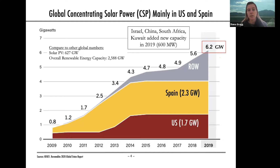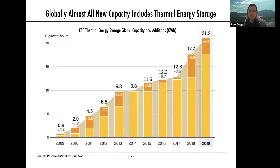The growth is taking place in other countries around the world. In 2019, those countries included Israel, China, South Africa, Kuwait, and France. To put this capacity in perspective, here is our capacity in gigawatts of CSP compared to solar photovoltaic gigawatts — again, very small capacity worldwide.